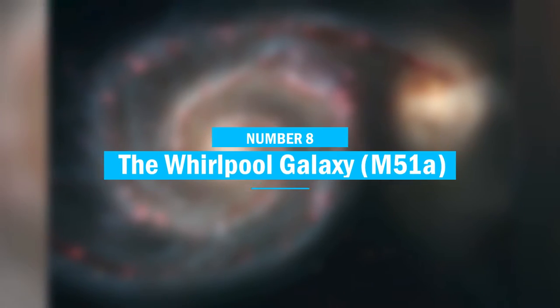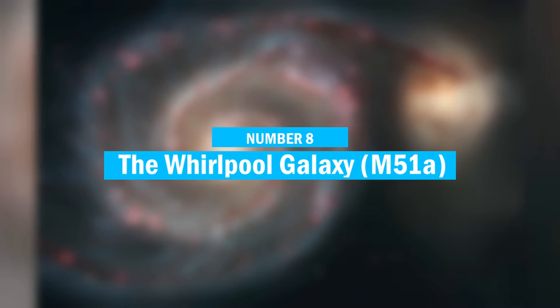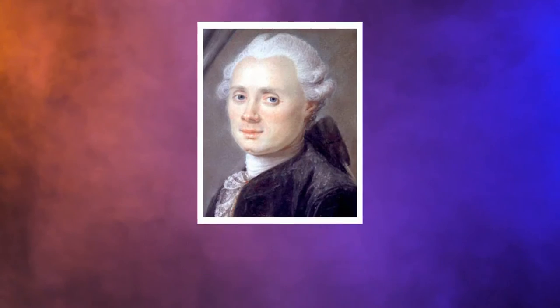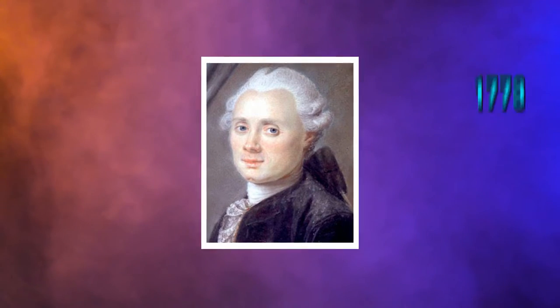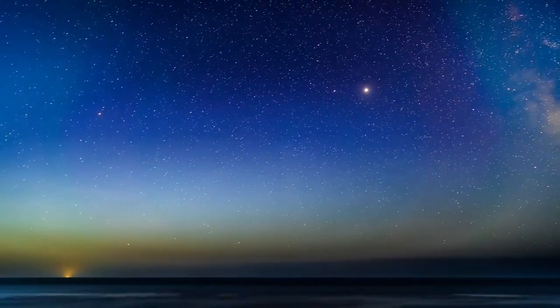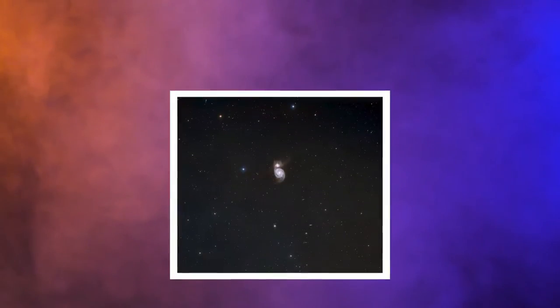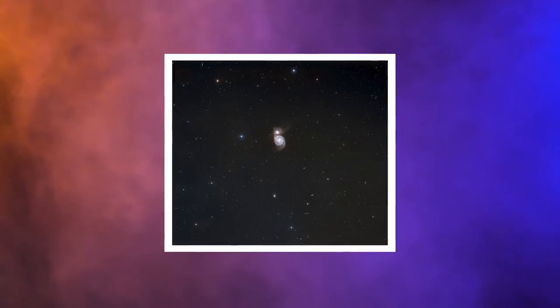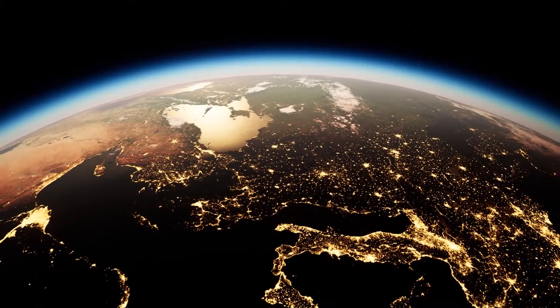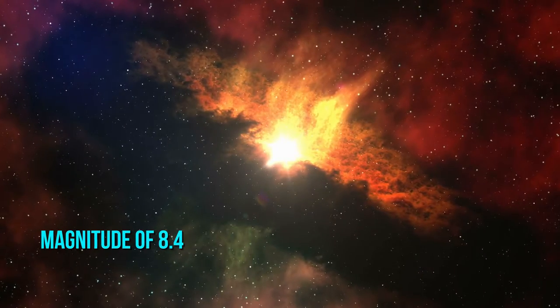Number 8. The Whirlpool Galaxy, M51A. The galaxy was found by Charles Messier in 1773 while mapping the skies for objects that could have been mistaken for comets. The Whirlpool Galaxy is another galaxy that has been visible for millennia from Earth. It's luminous enough to be viewed from all over the world, with a magnitude of 8.4.